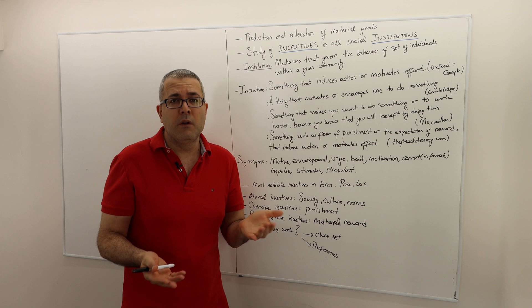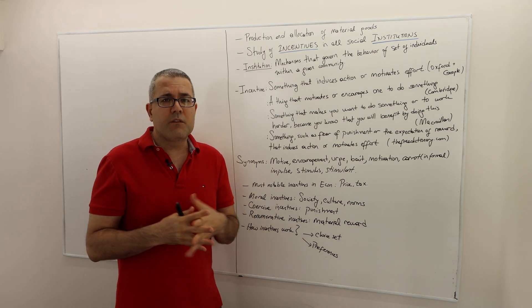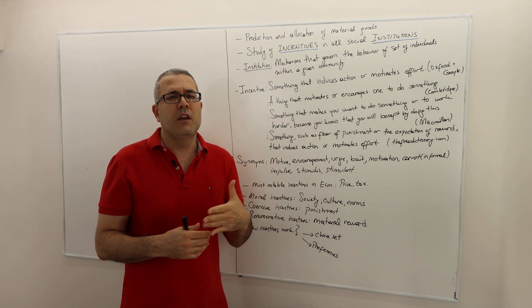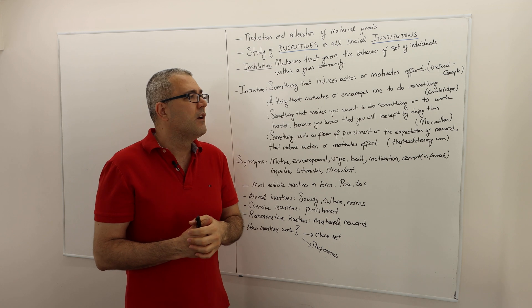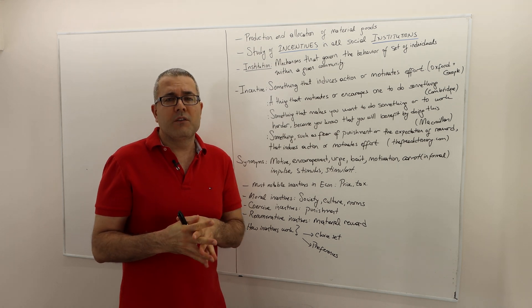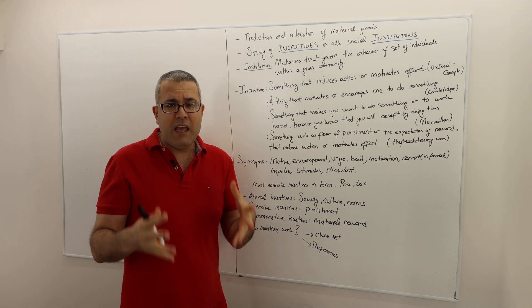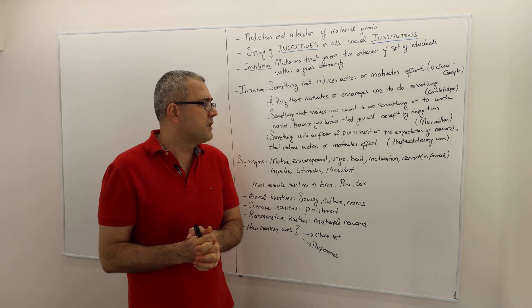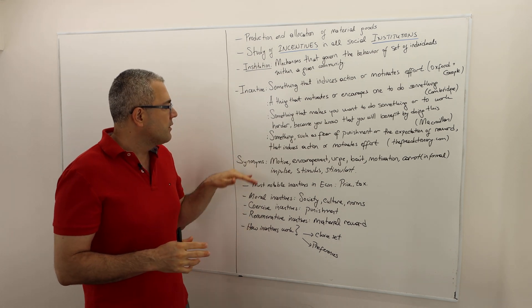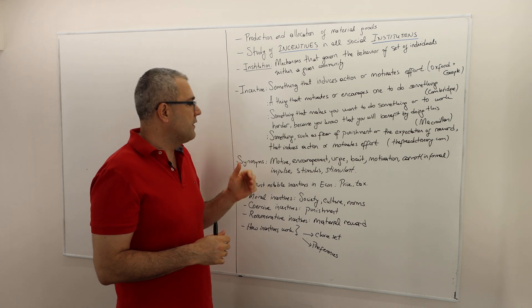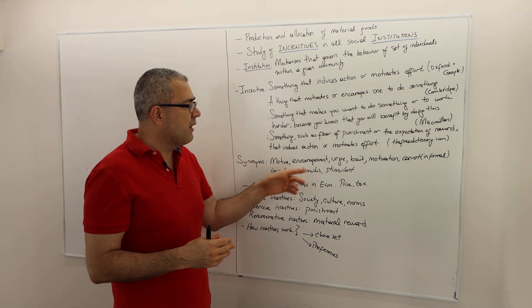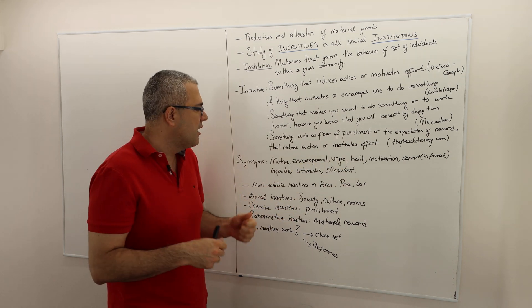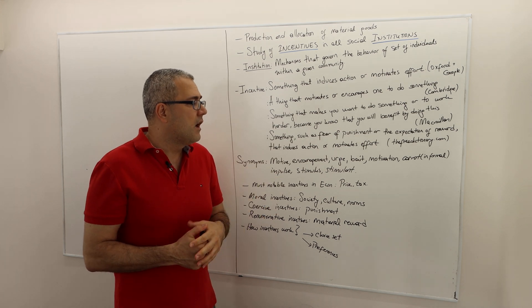The incentive is all about actions, behavior in terms of actions—what action or actions you take. Possibly because of this, actions and behaviors are the core of economic modeling and economic understanding. Some synonyms of incentive are motive, encouragement, urge, bait, motivation, carrot—in informal language like carrot and stick—impulse, stimulus, stimulant. They don't always mean the same thing depending on context, but these are highly common synonyms.